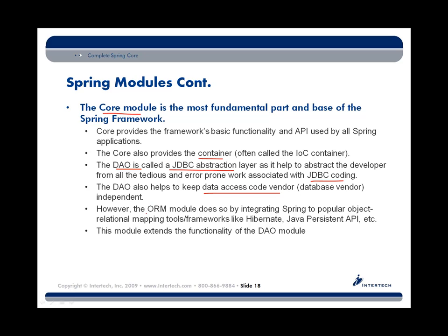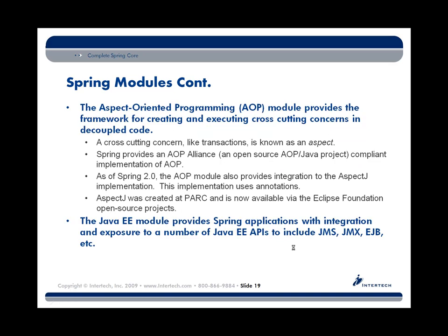Working alongside the DAO module is the ORM module, which helps integrate Spring applications with persistence technologies like Hibernate or JPA — Java Persistence API. These modules take those best-of-breed solutions and bring them into the Spring DAO format. The AOP module, as the name implies, gives us the cross-cutting concern mechanism to do aspect-oriented programming.